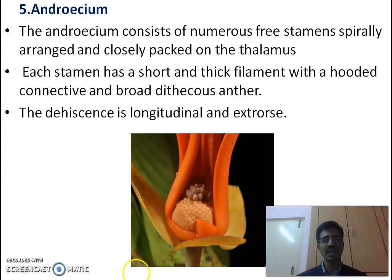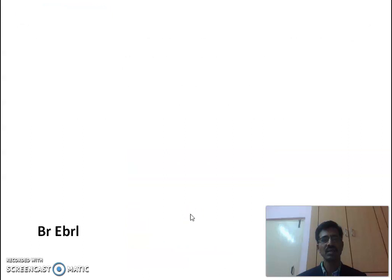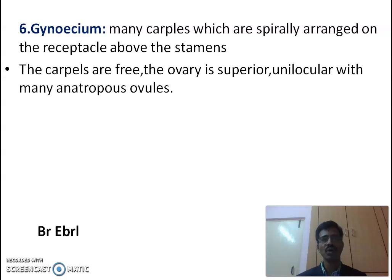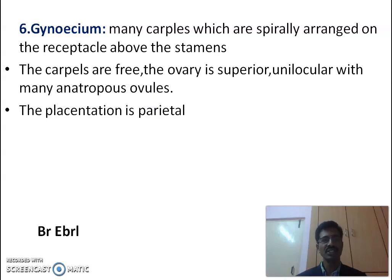In the gynoecium, many carpels are arranged spirally and they are free — this is also called the apocarpous condition. The ovary is superior and unilocular. In the ovary, anatropous ovules are arranged in parietal placentation. Anatropous ovules means inverted ovules; they are attached to the ovary wall, which is why it is called parietal placentation.